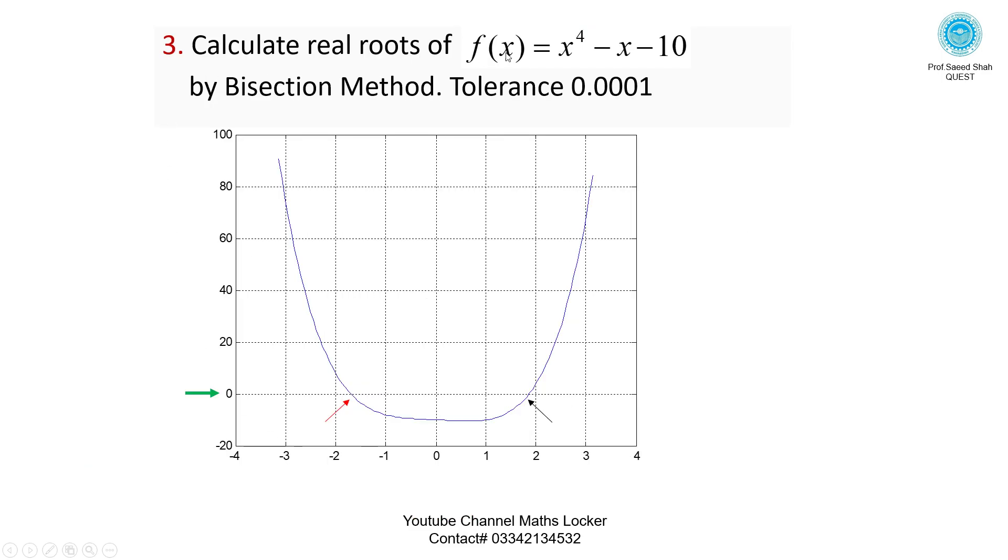Question Number 3: Calculate real root of f(x) = x^4 - x - 10 by bisection method, tolerance 0.0001. Here is a root lying in the interval -2 and -1, and the second root lying in the interval 1 and 2.